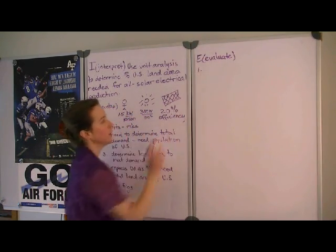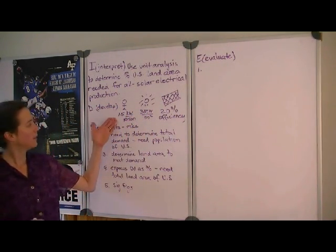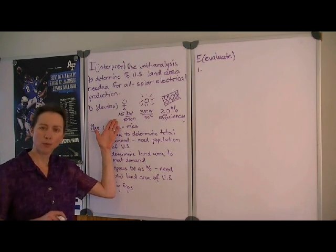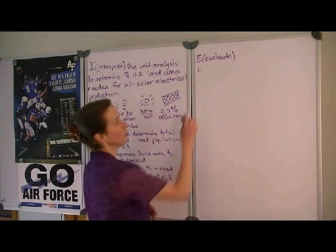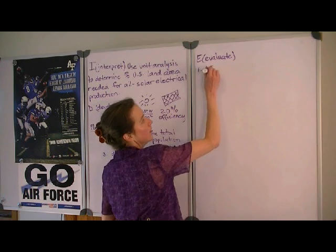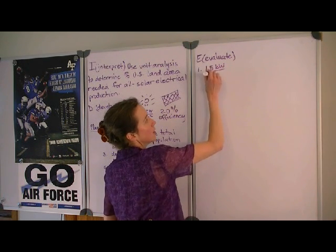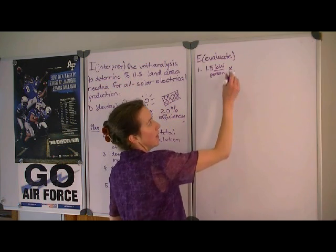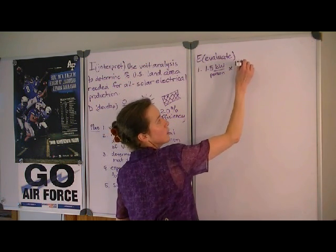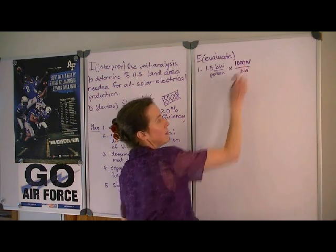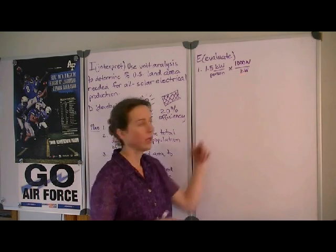As we consider our units, we see that the demand is given in kilowatts per person and we need to convert that to watts. So if we have 1.5 kilowatts per person, we want to multiply that by 1,000 watts per kilowatt because watts is the unit we want to end up with.